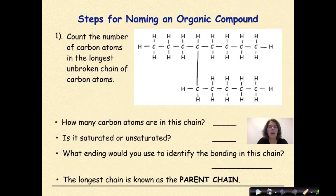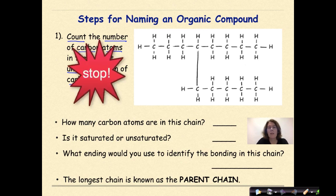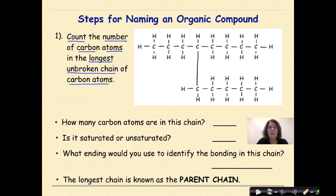Steps for naming an organic compound. The first thing that you need to do is count the number of carbon atoms in the longest unbroken chain of carbon atoms in the parent. So I want you to stop for a moment, look at this molecule, and see if you can figure out how many carbons are in the longest continuous chain. When you think you have an answer, press play and keep going. Welcome back. Let's see how you did.